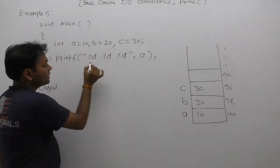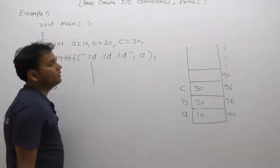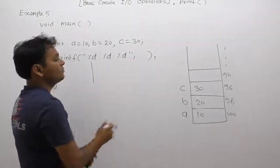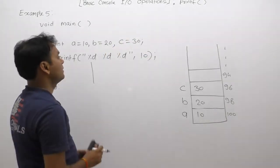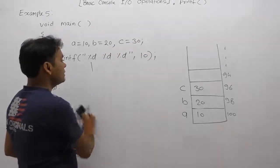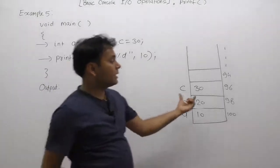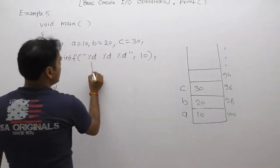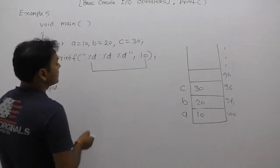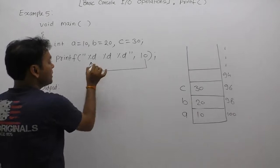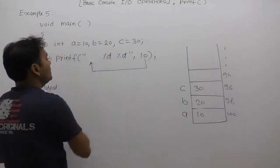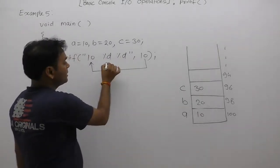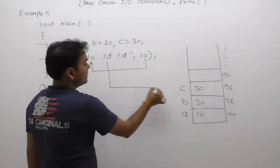Now the first format specifier is replaced by the corresponding parameter value a. What is the value of a? The value of a is 10. Therefore, in place of the first format specifier, we are replacing the value of the first argument, which is 10. So the first format specifier is replaced by value 10. Now let's see what the value of the remaining format specifiers are — we are replacing in that place.